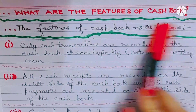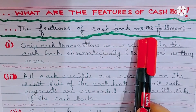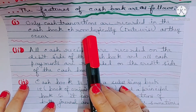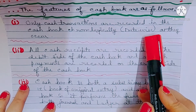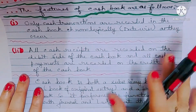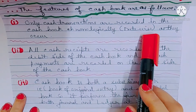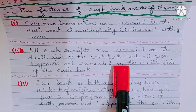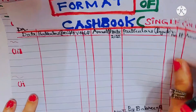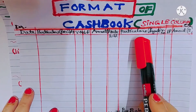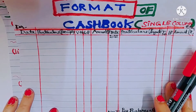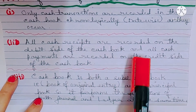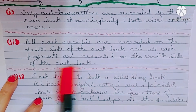The features of cash book are as follows. Number one: only cash transactions are recorded in the cash book, chronologically or date-wise as they occur. Number two: all cash receipts are recorded on the debit side of the cash book, and all cash payments are recorded on the credit side of the cash book.